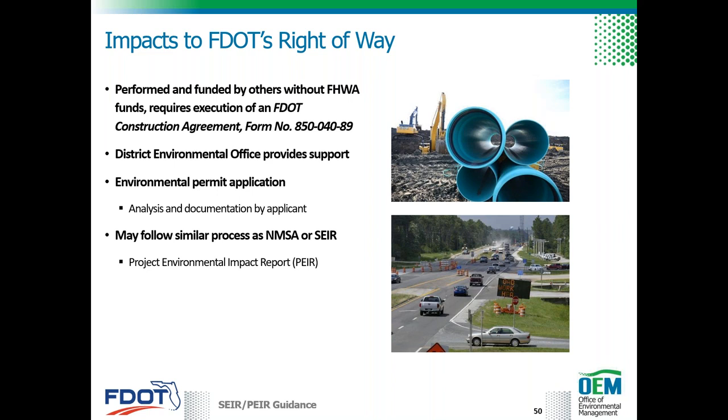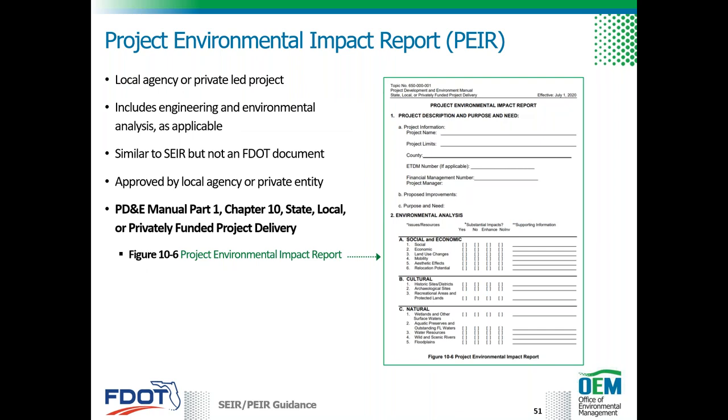The supporting environmental documentation for local and privately funded projects constructed on FDOT right-of-way — necessary to acquire environmental permits and an FDOT construction agreement — may end up being a Project Environmental Impact Report or PEER. The local agency or private entity-led projects might be documented in a PEER. The PEER includes both environmental and engineering analysis and includes similar information and topics to the SEER, but it's not prepared in SWEPT, so the format is a little different. The outline of a PEER is available in Part 1, Chapter 10 of the PD&E manual.